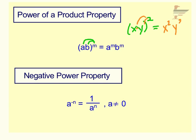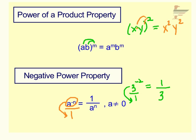We have a Negative Power property. Anytime that you're raising a base to a negative exponent, this is where you end up with a fraction. I think of it as: your negative exponent needs to be positive, so the whole thing will move — if it's in the numerator it comes down to the denominator, if it's in the denominator it goes up to the numerator. So for example, if you have 3 to the negative 2 power, there's a negative exponent so it goes down here; we'll leave a 1 up top, over 3 to the positive 2 power.